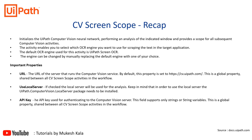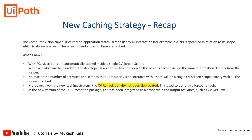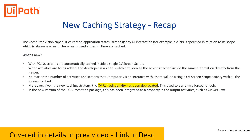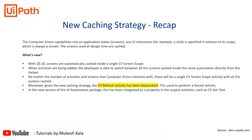To start with CV recording, we require the CV screen scope. We've also seen in the previous video the new caching strategy — something new in the CV scope — which means if you have to automate five different screens on a virtual machine, you don't need five different CV scopes; everything is handled by a single CV scope. If you don't understand the caching strategy, watch the linked video in the description.